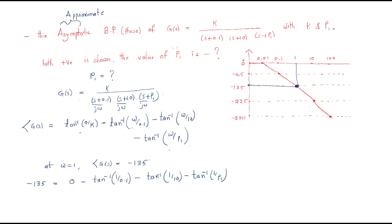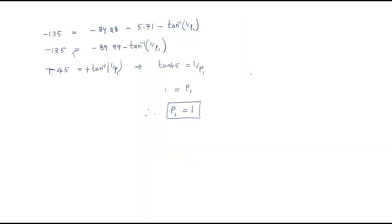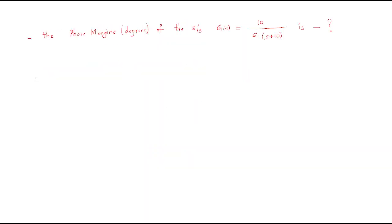This is the simple procedure: if the phase plot is given, write the phase expression, take any convenient frequency — here ω = 1 because it gives simple answers — substitute the given phase value, and solve to get P1. Now moving to the next problem.